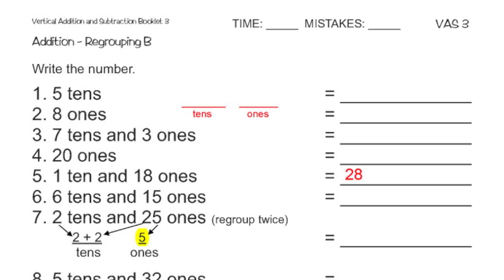Then I would add 2 to the tens column. It already had a previous 2, so 2 plus 2 makes 4. My final answer would be 45.